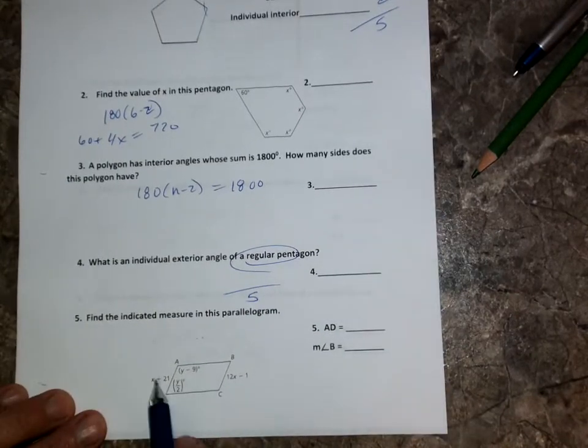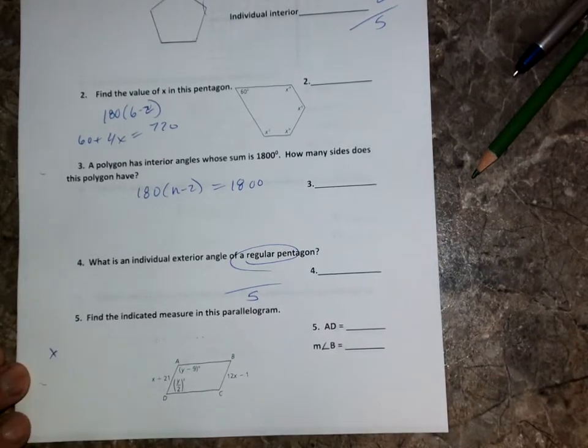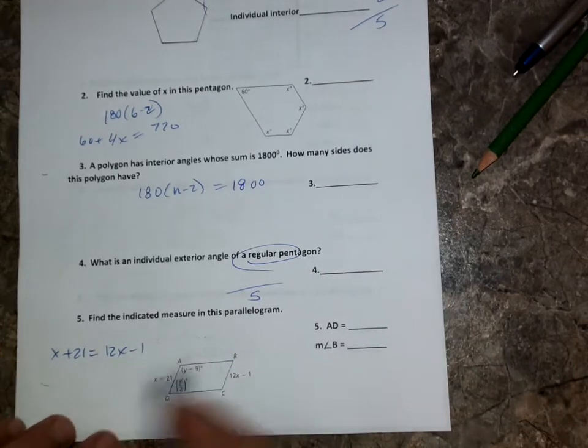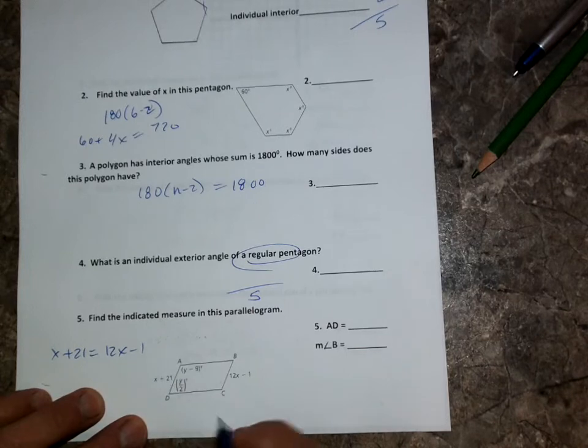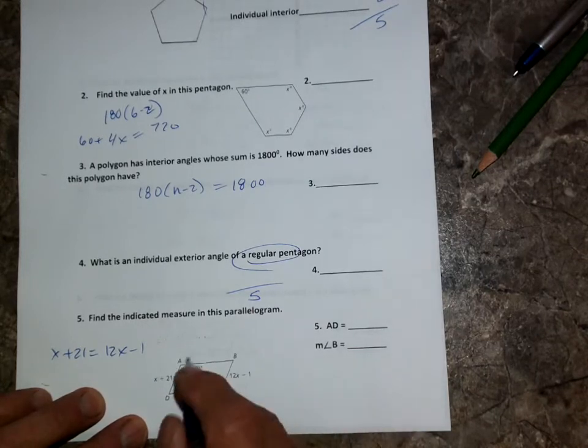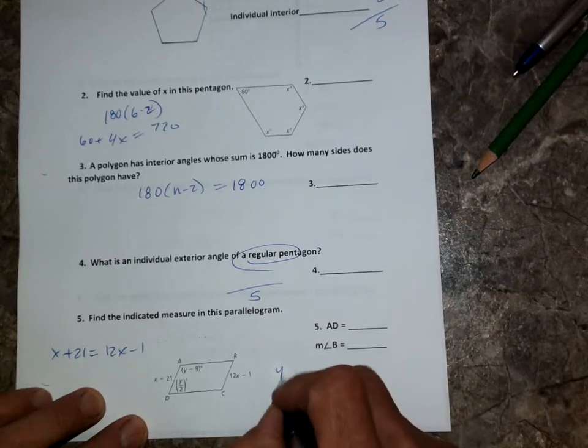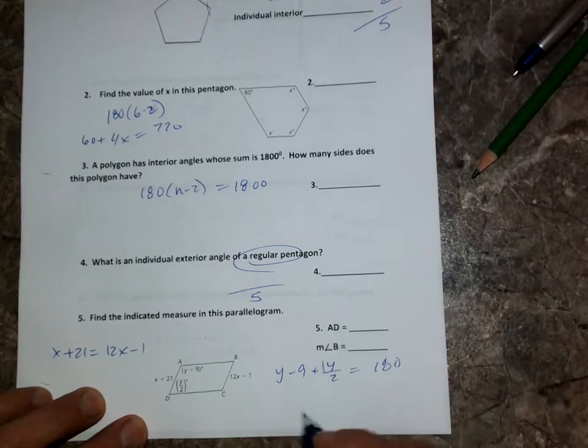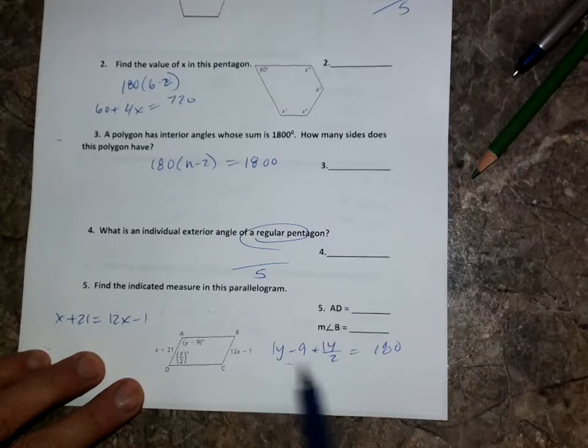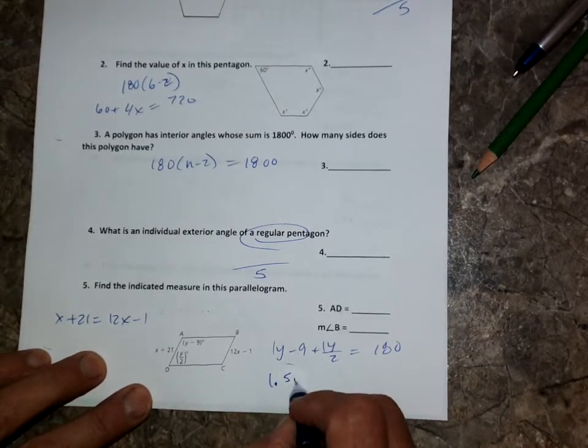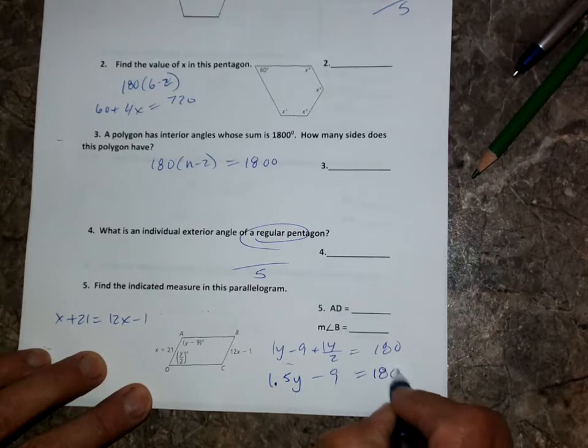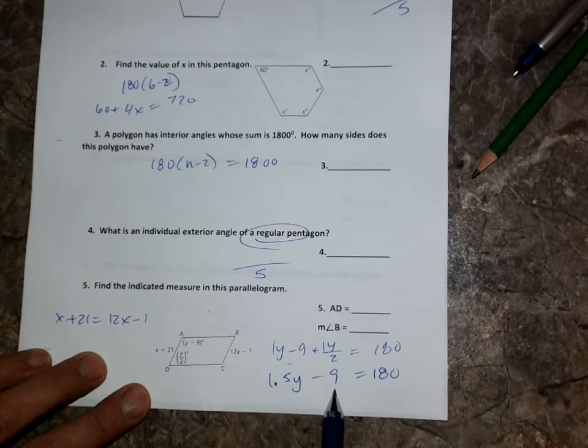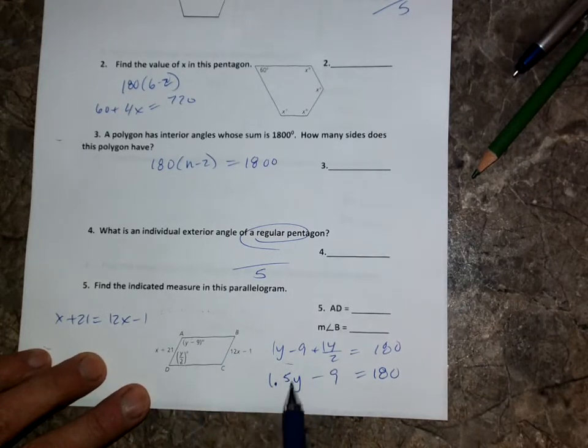Five, you know if it's a parallelogram, opposite sides are equal, so you're going to set up first X plus 21 equals 12X minus one. Solve for X. On this one, this one's a little tricky. I know these are not equal, but they add to 180. These two are supplementary, so I'm going to take Y minus nine plus Y over two equals 180. So here's how it works. Got a one and a one-and-a-half makes a 1.5Y minus nine equals 180. So solve for Y. When you get Y, plug it back in to here to get the value of angle B.